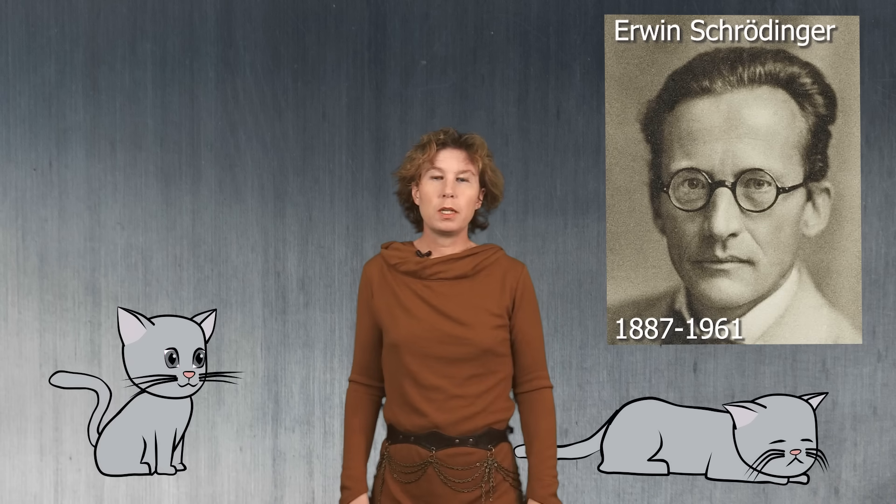If you know one thing about quantum mechanics, it's that Schrödinger's cat is both dead and alive. This is what physicists call a superposition. But what does this really mean? And what does it have to do with entanglement? This is what we will talk about today. The key to understanding superpositions is to have a look at how quantum mechanics works. In quantum mechanics there are no particles and no waves and no cats either. Everything is described by a wave function, usually denoted with the Greek letter psi.